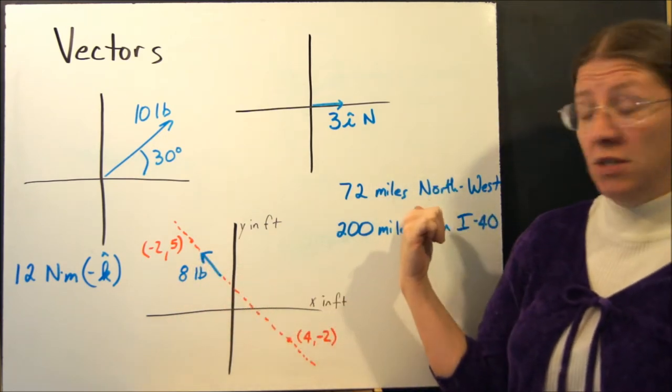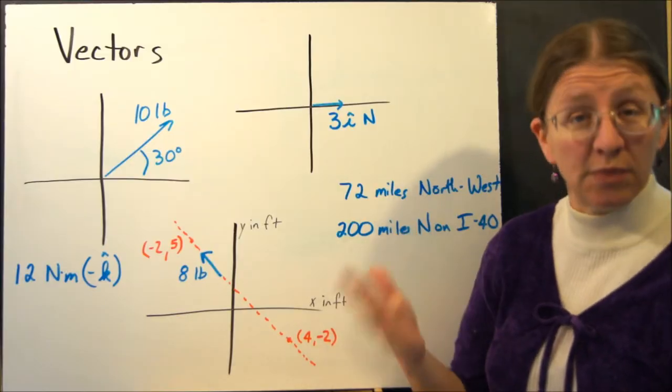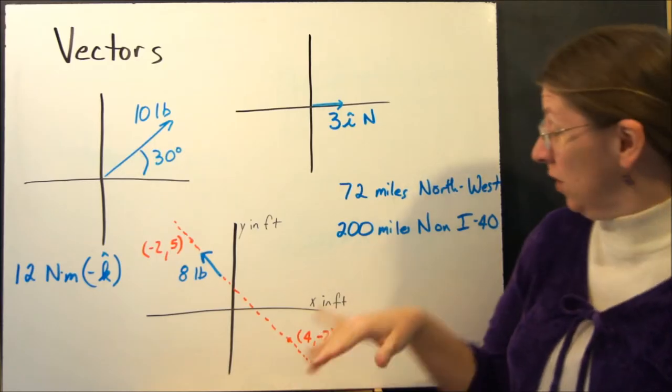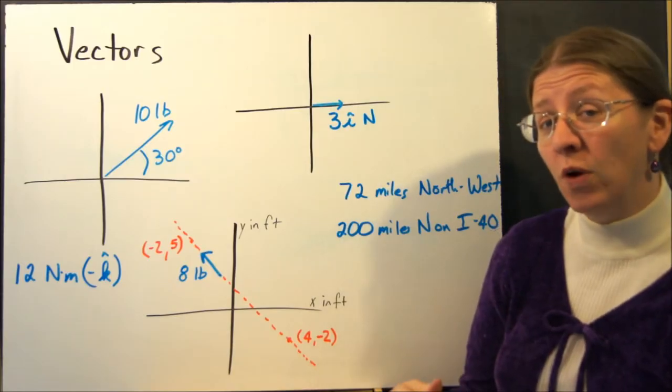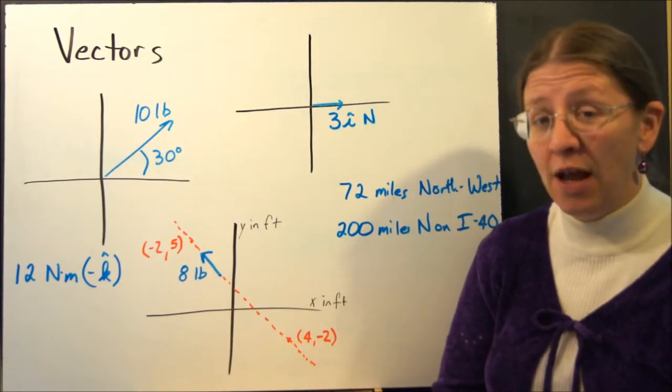I can give you directions. I'm going to go 72 miles northwest. That's a vector. I can also say I'm going to go 200 miles north along I-40. That's a vector. It has magnitude and direction.